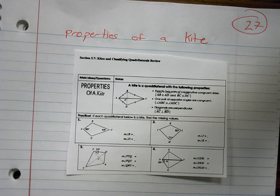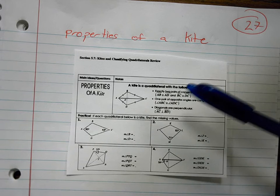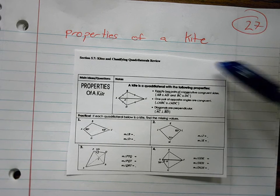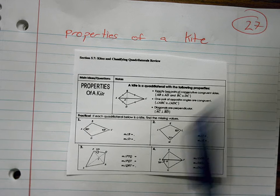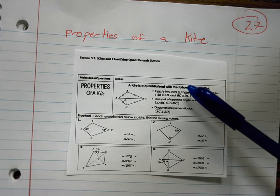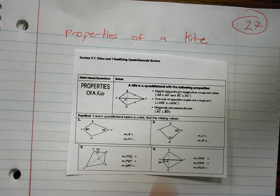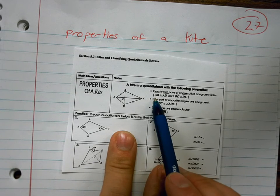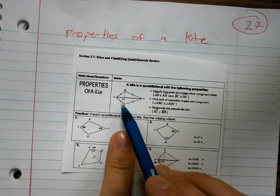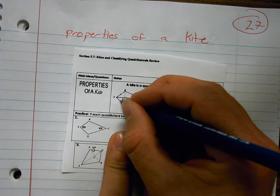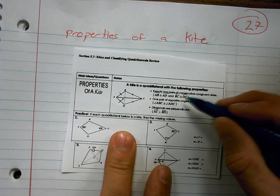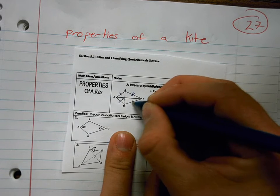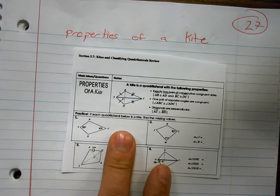Okay, so properties of a kite. A kite is a quadrilateral. Quadrilateral is a four-sided figure with the following properties. Exactly two pairs of consecutive congruent sides. So like it states here, AB and AD are congruent. These two sides are congruent and these two sides are congruent. Two pairs of consecutive sides.